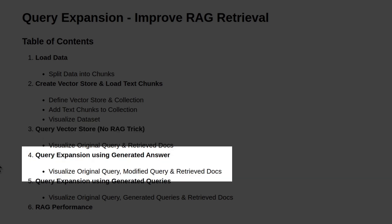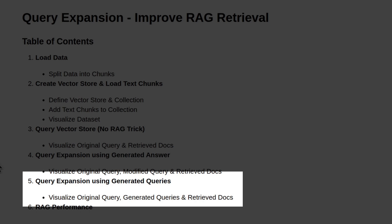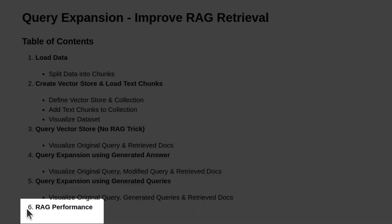In the fourth section, I introduce the query expansion algorithm using the generated answer approach to retrieve relevant documents. After retrieving relevant documents using this approach, we'll visualize the original query, the modified query, and the retrieved documents by projecting their embeddings onto the lower dimension. In the fifth section, I introduce query expansion using the generated queries approach. In the sixth and last section, we build a simple RAG app to check the performance of retrieved documents from the third, fourth, and fifth sections.